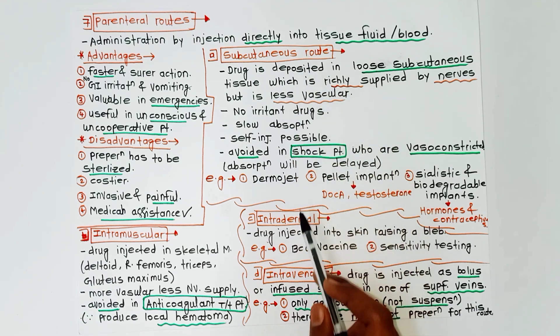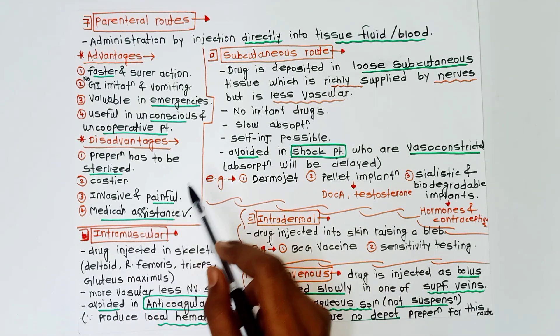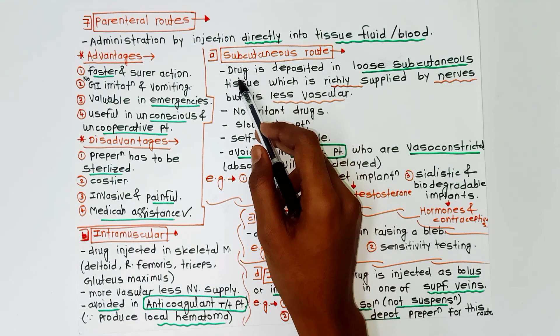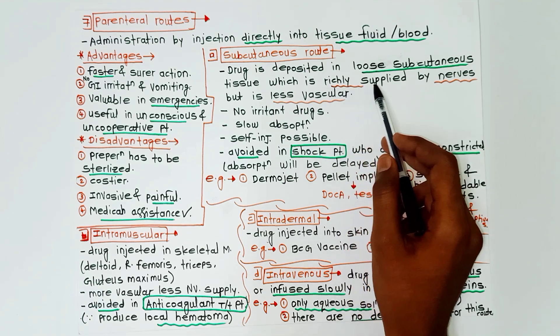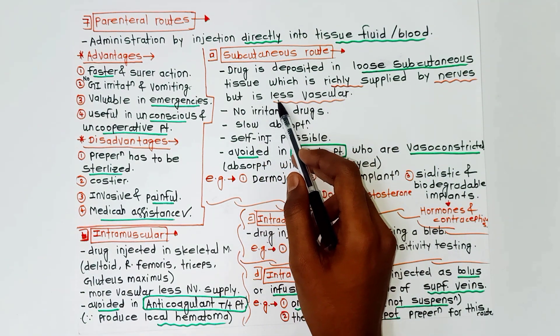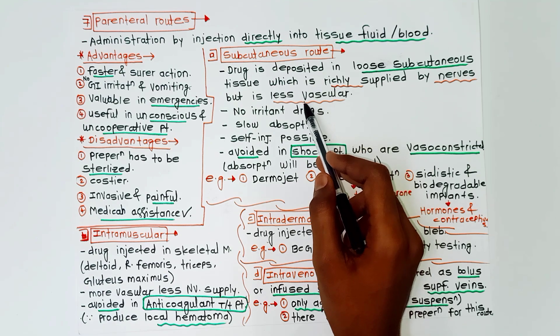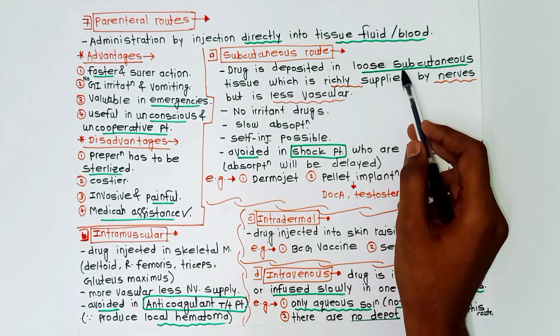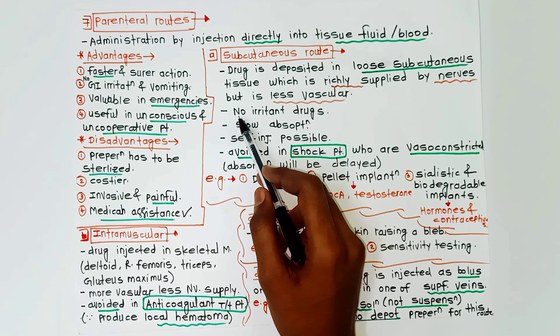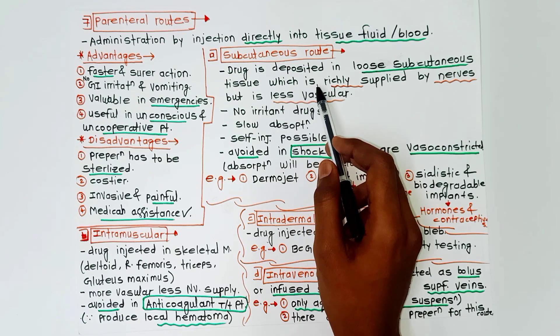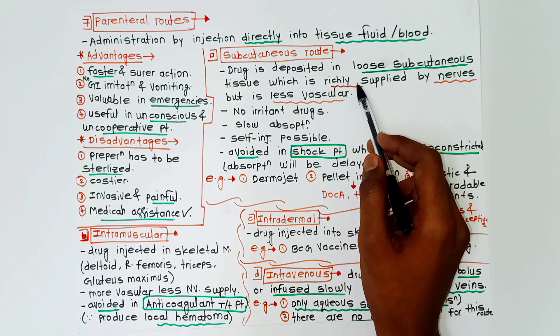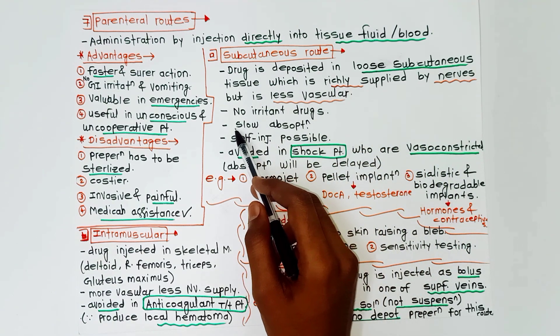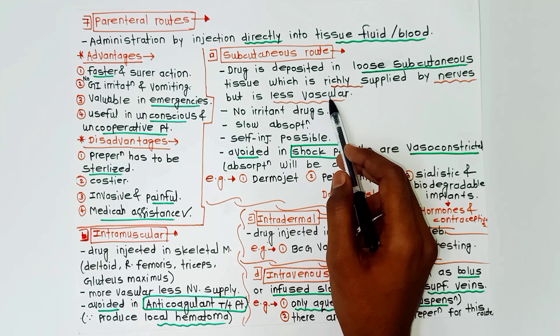First of all, subcutaneous route. The drug is deposited in the loose subcutaneous tissue which is richly supplied by nerves but is less vascular. Now, no irritant drugs are not given by this route because there is rich nerve supply there, and there is slow absorption due to the less vascularity.